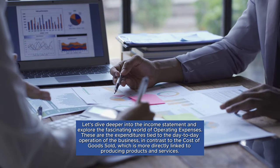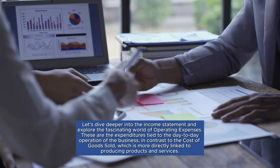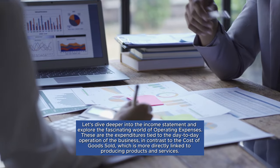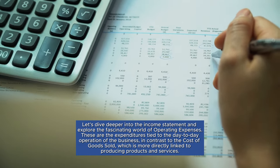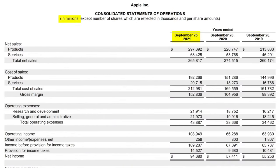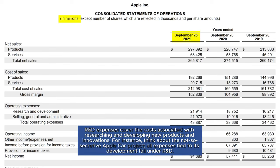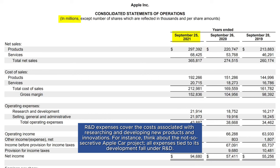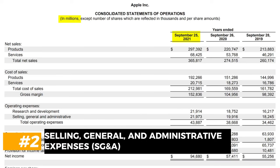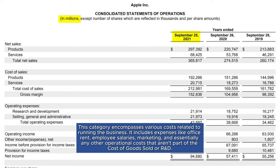Let's dive deeper into the income statement and explore operating expenses — the expenditures tied to the day-to-day operation of the business, in contrast to the cost of goods sold. For Apple, the primary categories of operating expenses include: (1) Research and Development — R&D expenses cover the costs associated with researching and developing new products and innovations, such as the Apple Car project; and (2) Selling, General, and Administrative Expenses — this category encompasses costs like office rent, employee salaries, marketing, and any other operational costs not part of COGS or R&D.